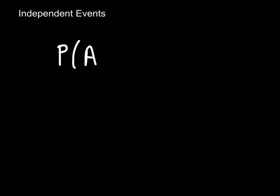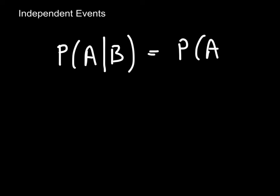Independent events are ones which have absolutely no effect on each other — the outcome of one event does not influence the outcome of the other. Thinking of conditional probability, if events A and B are independent, the probability of A happening is exactly the same whether or not B has happened, because B is irrelevant. So the probability of A given that B is happening is basically just the probability of A.